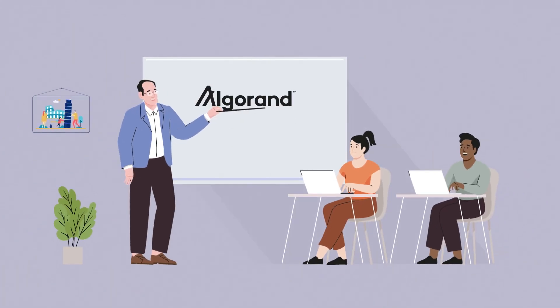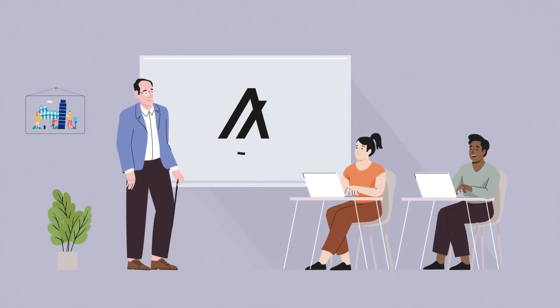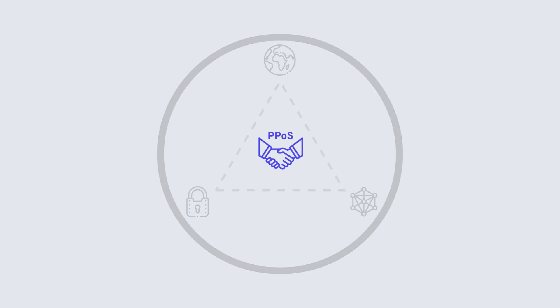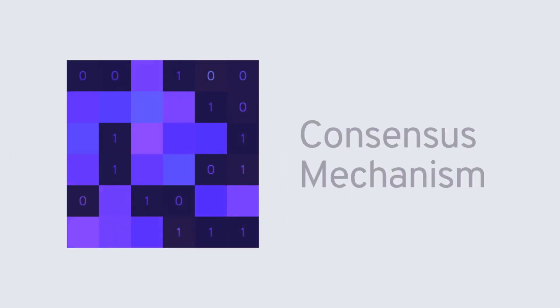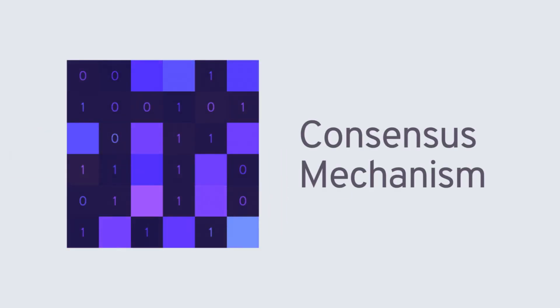Okay class, let's talk about the first of the key Algorand features: the pure proof-of-stake consensus approach. The most important and fundamental task in a blockchain is the secure, reliable, and fast creation of the next block in the chain. The tool to create and validate the next block in a blockchain is called the consensus mechanism.